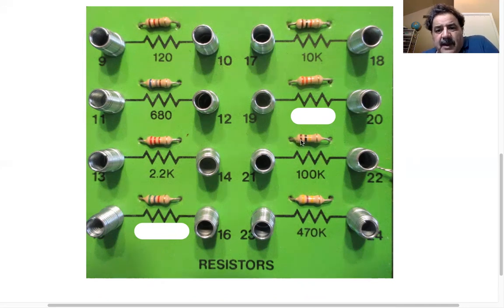This one is brown, black, and yellow, so that's 1, 0 times 10 to the 4th. So that's 10 times 10,000, so that's 100,000.